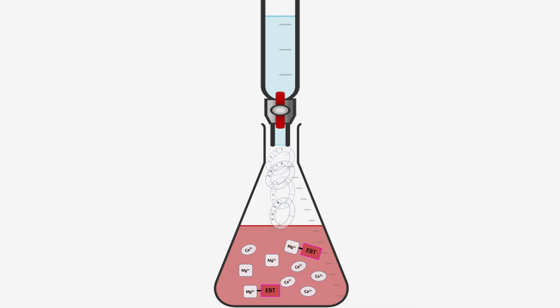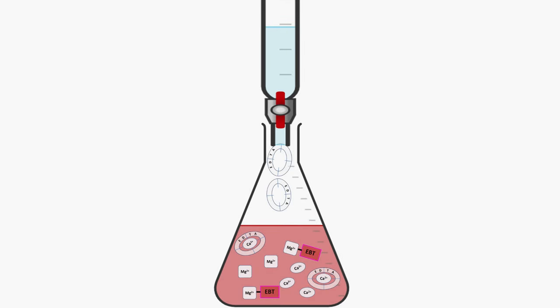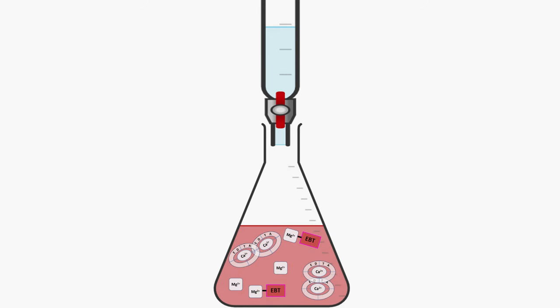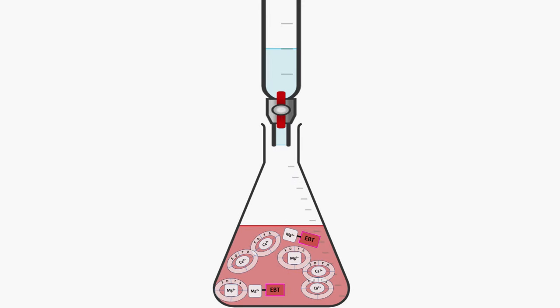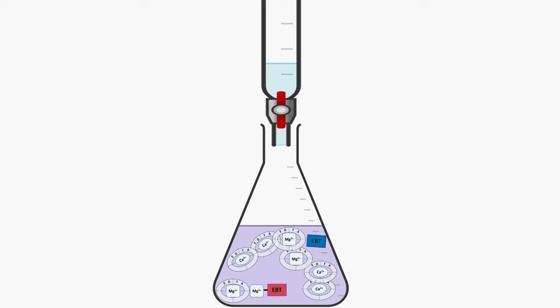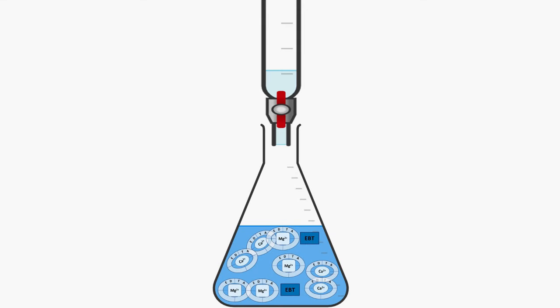Let's dive into what happens inside the flask. At first, EDTA chelates free calcium and not magnesium due to its higher affinity. As titration proceeds, EDTA binds free magnesium and then starts displacing magnesium from EBT. Some EBT molecules become free and solution becomes purple. Finally, all magnesium ions are bound by EDTA, all EBT molecules are free and solution turns to blue.